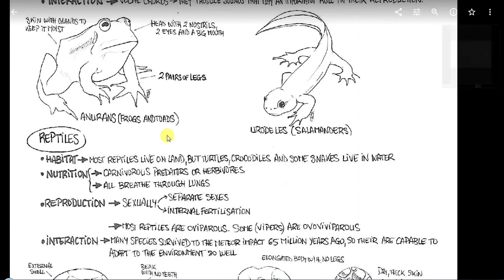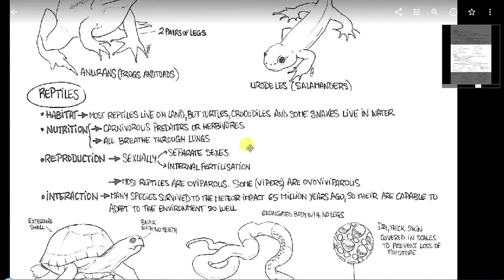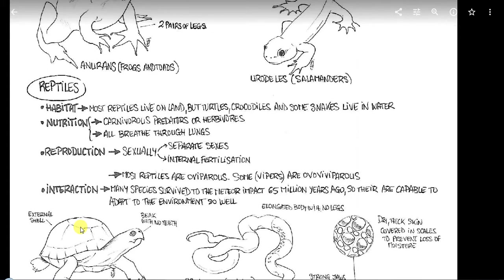Reptiles. Habitats: Most reptiles live on land, but turtles, crocodiles, and some snakes live in water. Nutrition: carnivores, predators, or herbivores, all bred through lungs. Reproduction: sexually, separate sexes, and internal fertilization. Most reptiles are oviparous, some of them, like vipers, are ovoviviparous. Interaction: many species survived to the meteor impact 65 million years ago, so there, they are capable to adapt to the environment so well.